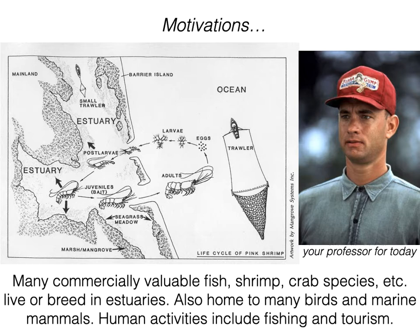Here is a picture from the famous movie Forrest Gump — the shrimp fishery, which is very popular throughout the world in estuaries. In the southern United States, in the Gulf of Mexico, there is a major shrimp industry. These are estuary species, and the life cycle of a shrimp shows that they use both the coastal ocean and the estuary for different parts of their life cycle. Maintaining the health of the estuary is very important to maintain the health of this fishery.